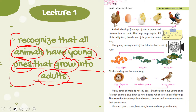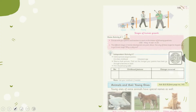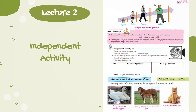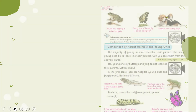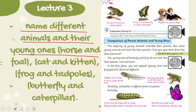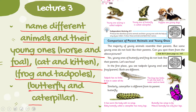In lecture number two, the students will be able to do an independent activity related to animals and their young ones — like horse and foal, cat and kitten, frog and tadpoles, and butterfly and caterpillar.